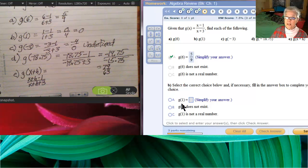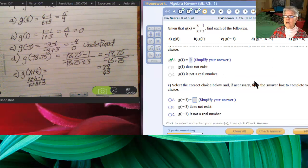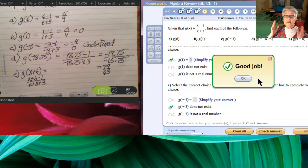Now, g of 1 equals 0. g of negative 3 is undefined. It does not exist. Same meaning.